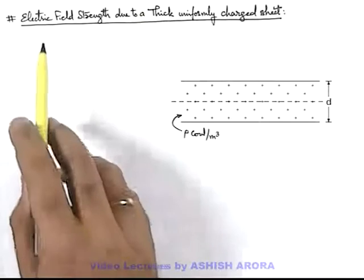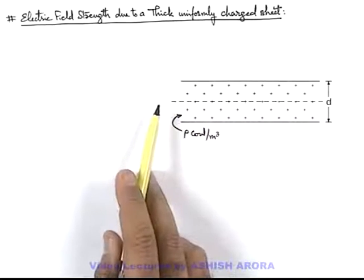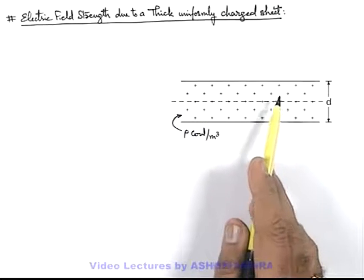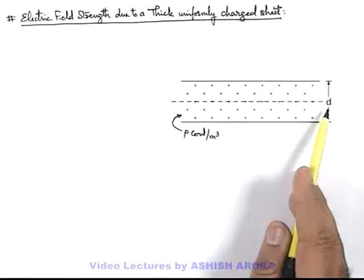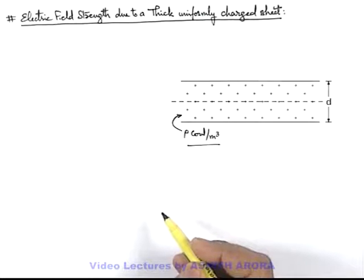Let's study the electric field strength due to a thick uniformly charged sheet. Here this figure shows a thick sheet of width d which is uniformly charged with a charge density of ρ coulomb per meter cube.